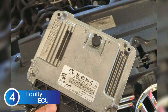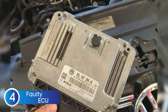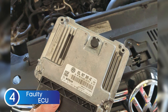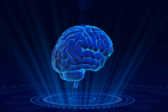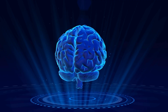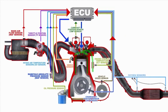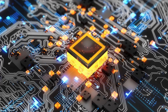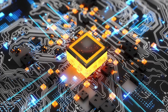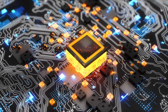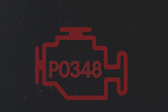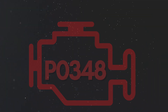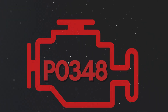The fourth cause is ECU failure or software issues. The ECU — basically the brain of your engine — relies on data from multiple sensors, including the camshaft position sensor, to manage engine timing and fuel injection. While it's rare, the ECU itself can sometimes develop internal faults or software glitches. When that happens, it might misread or misinterpret the signals coming from the camshaft sensor, triggering the P0348 code even if the sensor and wiring are perfectly fine.